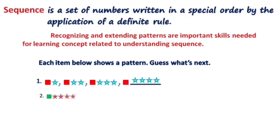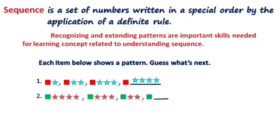For number 2, we have a square and 4 stars. The next set has a square and 3 stars. Then a square and 2 stars. Based on the patterns from the first, second, and third sets, there is a decreasing number of stars in each turn. From here, you can now guess the next set of patterns. If your answer is a square and a star, you are correct.